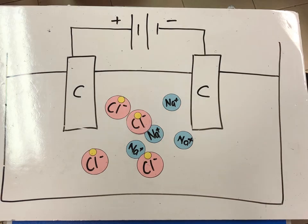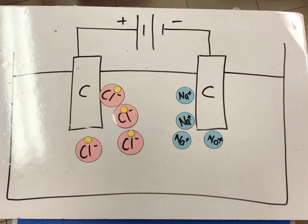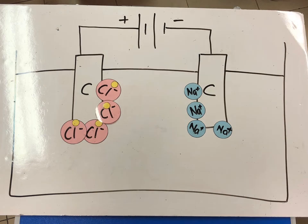When the electrolysis starts, the chloride anions will migrate towards the positive electrode, while the sodium cations will migrate towards the negative electrode.